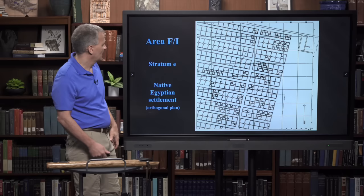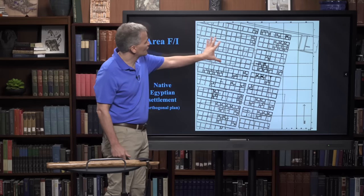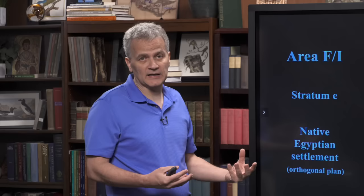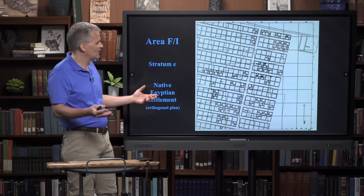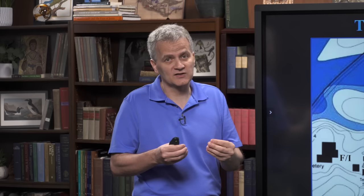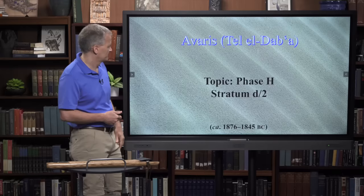What did the site look like pre-phase H, before Jacob moves there? We have an orthogonal grid of a native Egyptian settlement. Probably these were workers here to cultivate land and to build the temple for the deceased originator of Dynasty 12. So there were activities they would have been engaged in. R1 is an important place because it has the temple there, and inside the temple was an important inscription found that connects the Israelites to this very site.